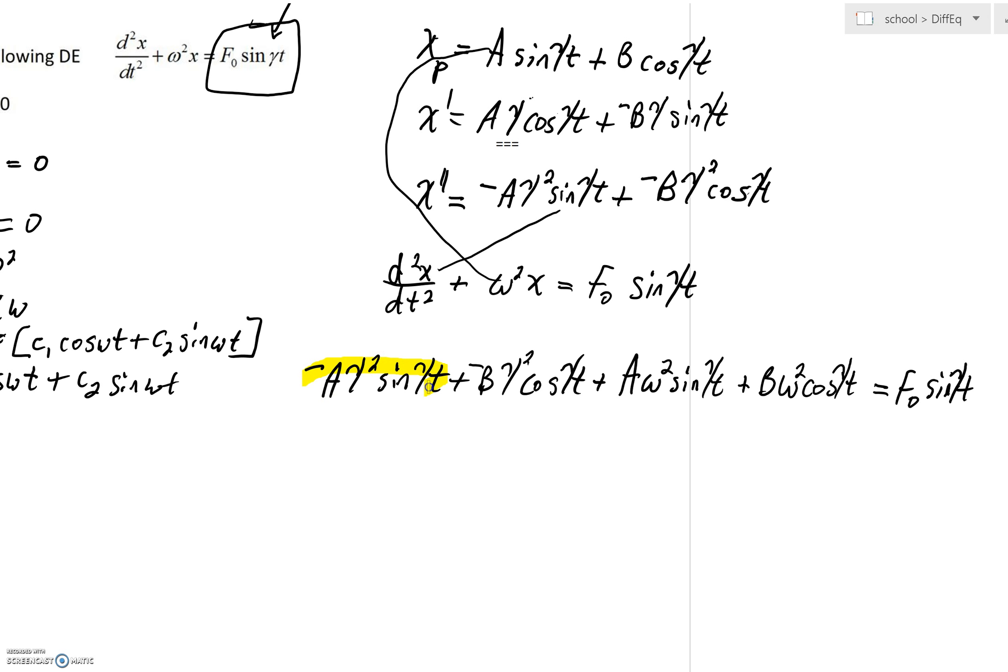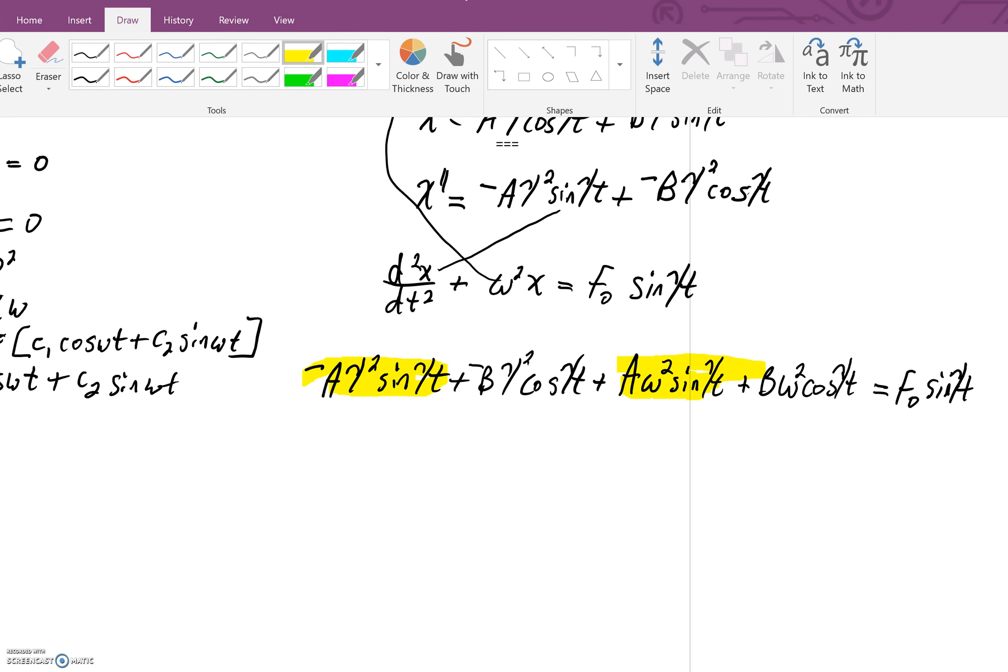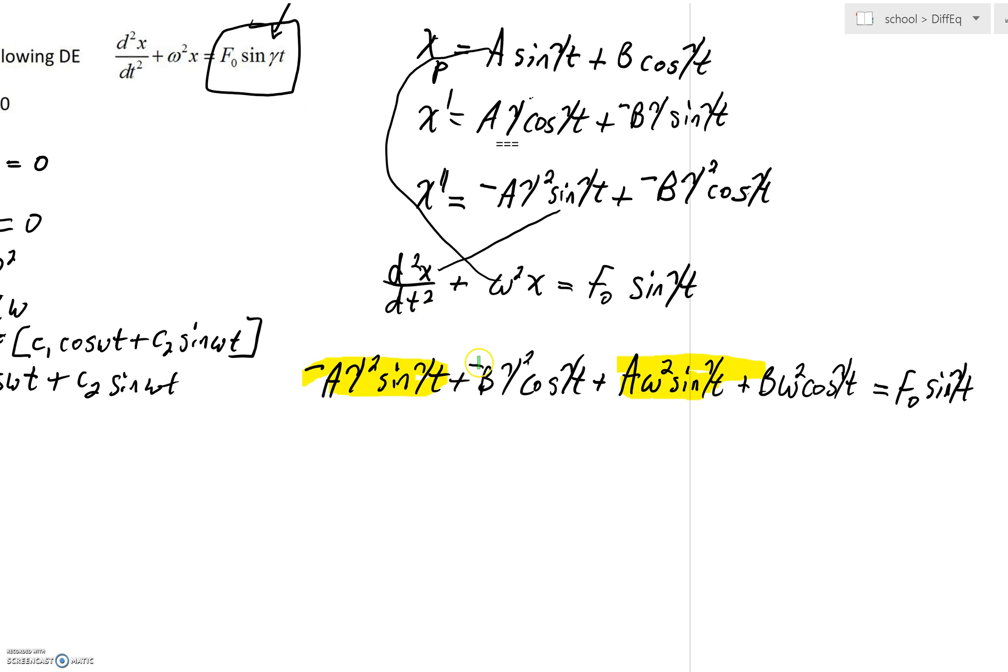And we're also going to have two terms involving cos(γt). We can maybe make those green. Really, we're going to do analysis of coefficients here.